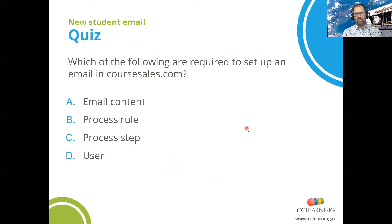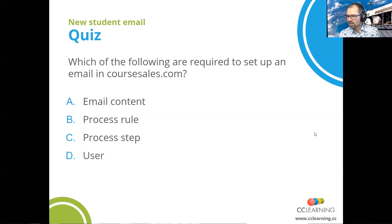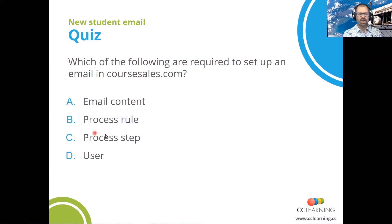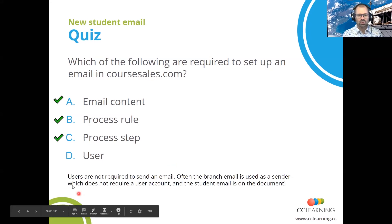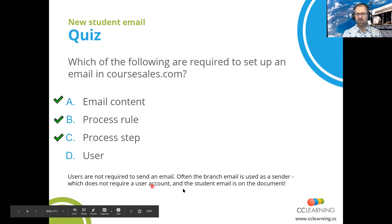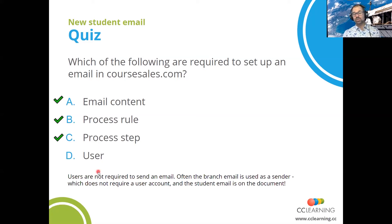Here's a quiz: which of the following are required to set up an email in CourseSales? Feel free to choose more than one. So — email content, that seems pretty obvious; email process rule — those first three sound pretty convincing. The answer is: users are not required to send an email. Often the branch email is used as the sender, which does not require a user account because the branch is already set up, and the student email is on the document. If you need to send to a trainer, a trainer is registered as a user, so that would be a requirement. The answer is A, B, and C.